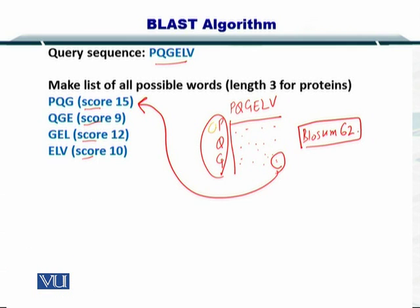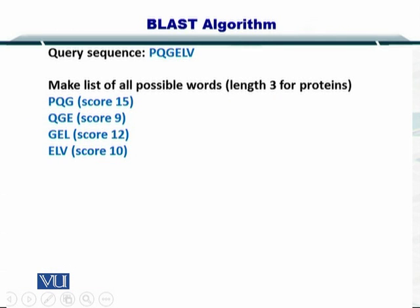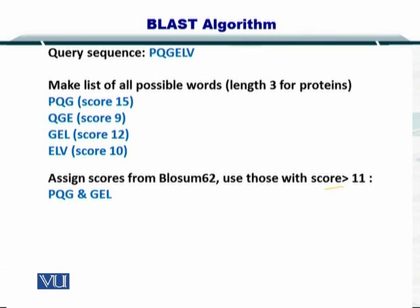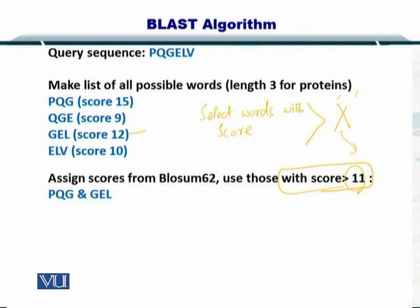Next, you compute the score for QGE and put it here, and so on. Once you have computed the alignment score for each of these words, we set a threshold. The threshold means we select those words which have a score greater than some value X. In this case, X has been chosen to be 11. The only two words with a score greater than 11 are PQG and GEL, so you select them.